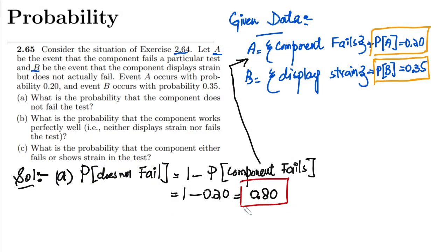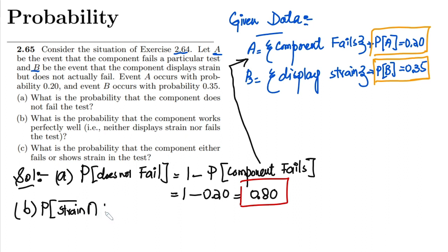So 0.80 is the answer to part A. For part B, I have to find the probability that the component works perfectly well — meaning it neither displays strain nor fails the test. So neither of the two conditions should occur. I need to find the probability that strain is not present and failure does not occur.